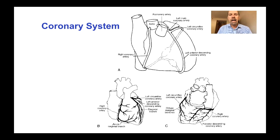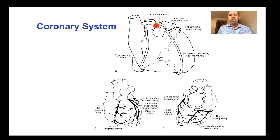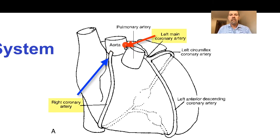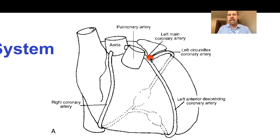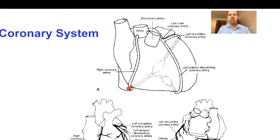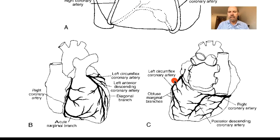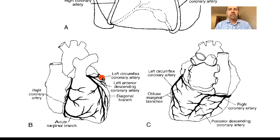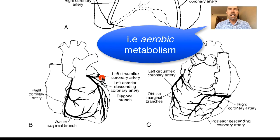The coronary system of arteries and veins is so named because its pattern looks like a crown. The left and right coronary arteries come straight off the aorta — they are the first circulations to be perfused in the systemic circulation. The left main coronary artery quickly bifurcates into the left circumflex coronary artery, which travels around the base of the left ventricle, and the left anterior descending coronary artery, which follows down the border between the left and right ventricles. The right coronary artery follows around the base of the right ventricle. Other major arteries include the diagonal branches of the LAD and a septal artery. This system ensures that all parts of the ventricular walls are well perfused, because cardiac muscle depends exclusively on oxidative phosphorylation for its energy supply.